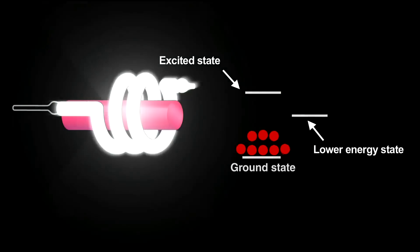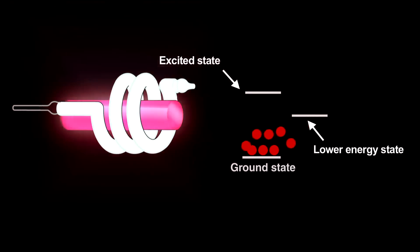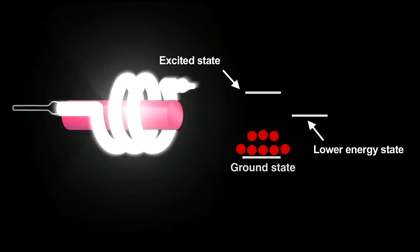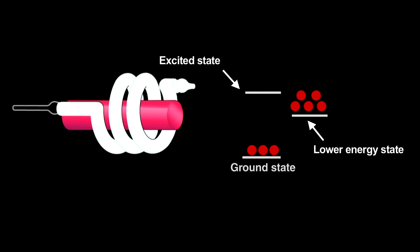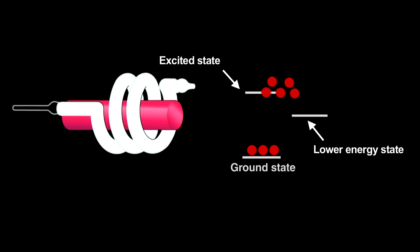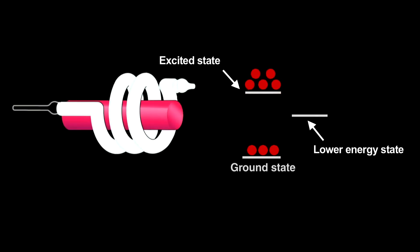To create a laser takes an extremely powerful lamp. In the ruby laser, repeated flashes, called pumping, make something amazing happen. They supply so much energy that a population inversion occurs. Here, more electrons in the energy level just above the ground state than in the ground state.